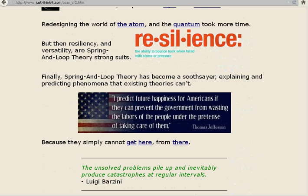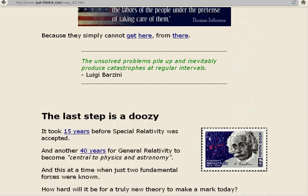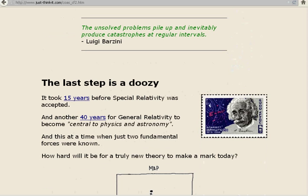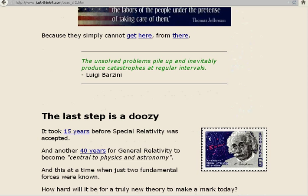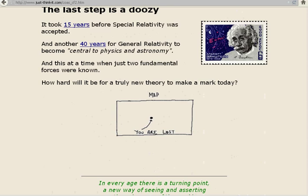The last step is a doozy. It took 15 years before special relativity was accepted, and another 40 years for general relativity to become central to physics and astronomy. And this at a time when just two fundamental forces were known. How hard will it be for a truly new theory to make a mark today? In every age there is a turning point, a new way of seeing and asserting the coherence of the world. Jacob Bronowski.